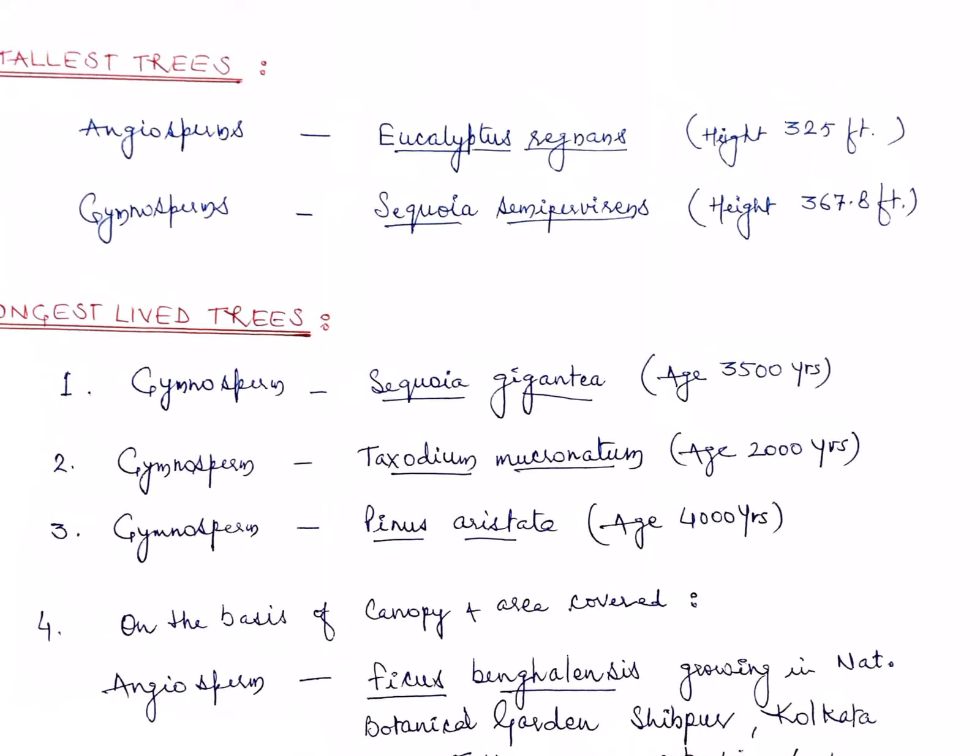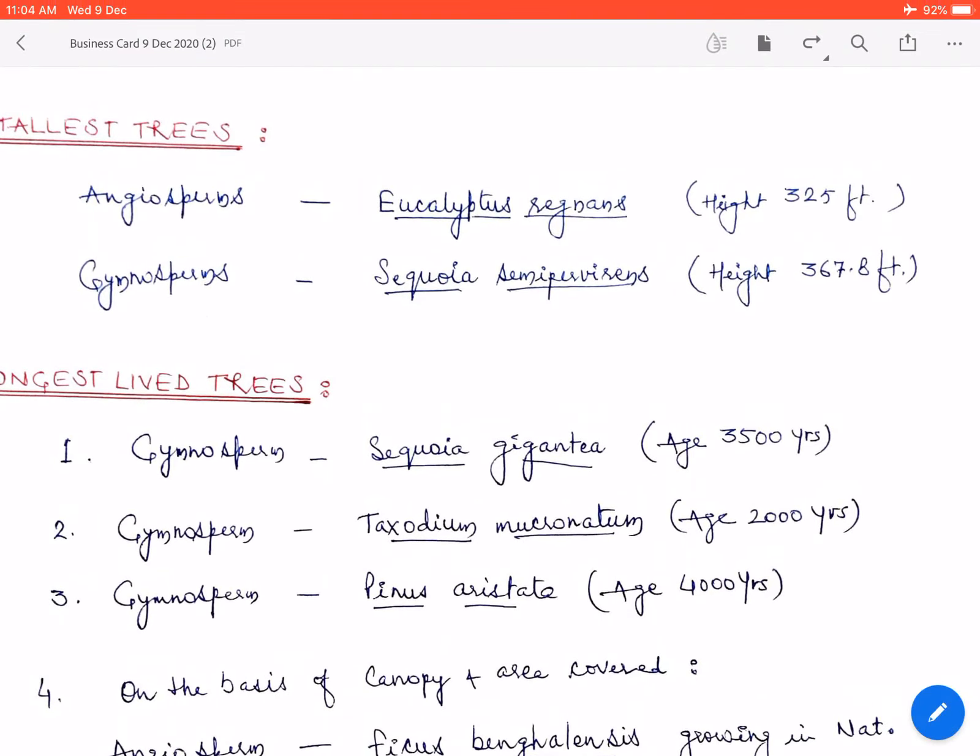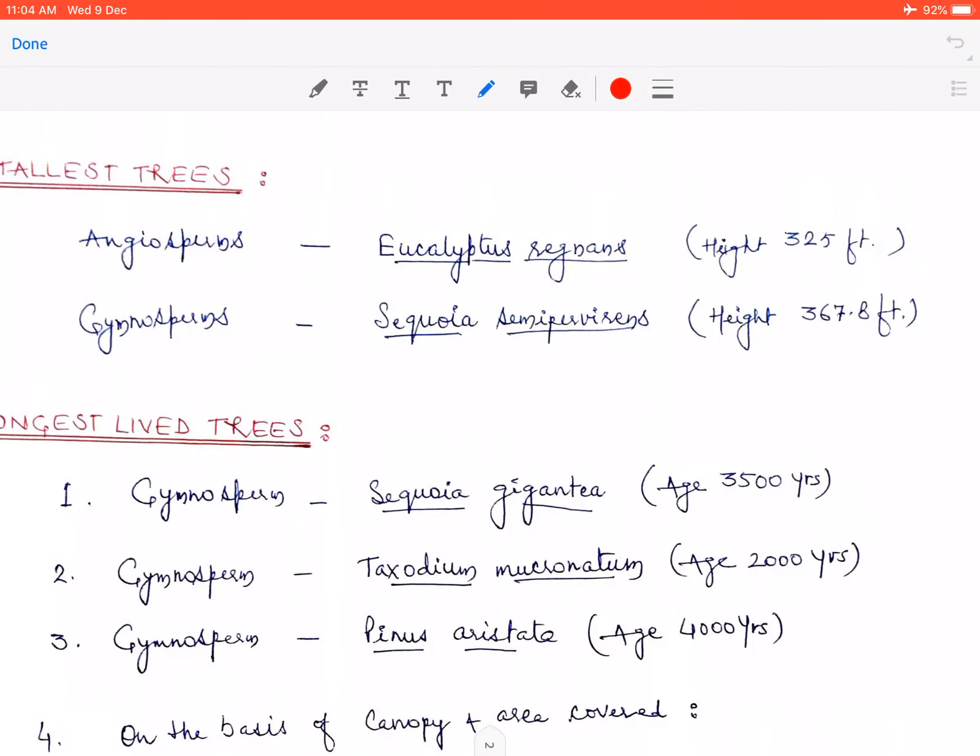Aur uska naam hai Eucalyptus regnans. Aur ye jo angiosperm hai Eucalyptus regnans, ye jo aap naam yahan par dekh rahe hain, ye iski height jo hoti hai karib 325 feet ke karib hoti hai.